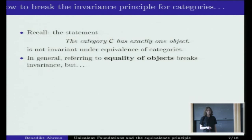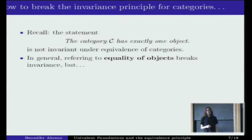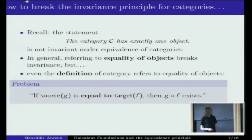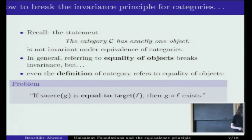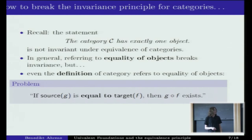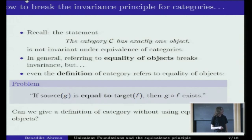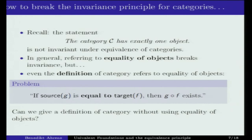Where does the non-invariance come from in this statement? It comes from the fact that we refer to equality of objects in a category. We would like to avoid talking about equality of objects in a category to remain invariant. But even a naive definition of category refers to equality of objects — namely, in the definition of composition: two arrows are composable only if the source of the second is equal to the target of the first.